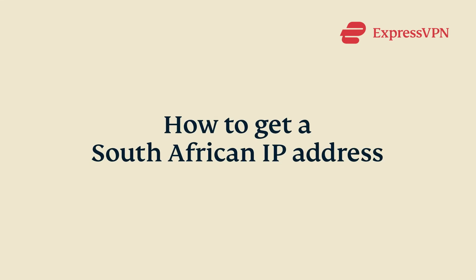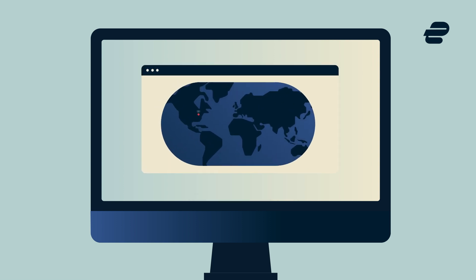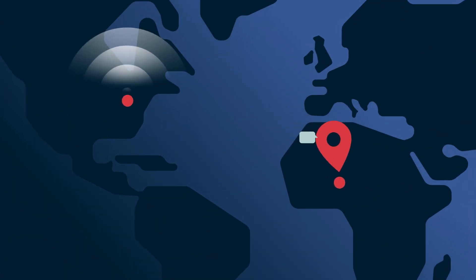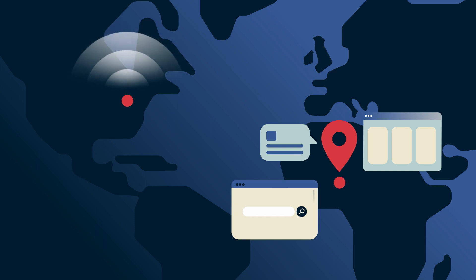Let's go through how to get a South African IP address. The best way to get a South African IP address is to use a VPN, or Virtual Private Network. VPNs work by directing your internet traffic through a server in the country of your choice, letting you browse the internet as if you were in that location physically.